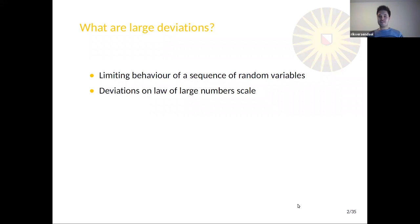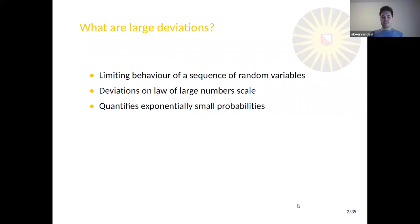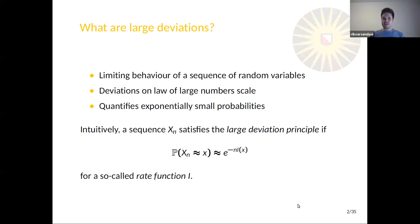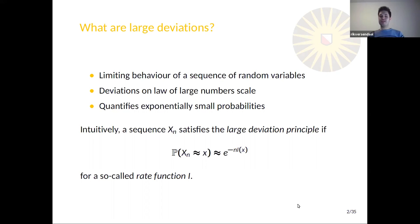Such events typically have exponentially small probabilities, and the whole point is that we try to quantify these small probabilities. Intuitively, we say that a sequence x_n satisfies a large deviation principle if the probability that our random variables are near some point x decays exponentially in n with a certain rate, and this rate depends on the point x. Usually the idea is also to find a nice formula for this rate function to have more information.